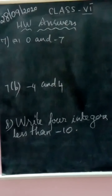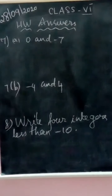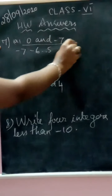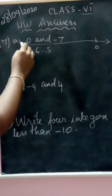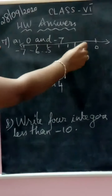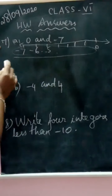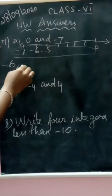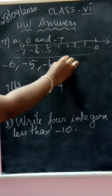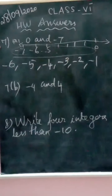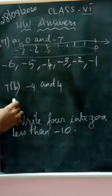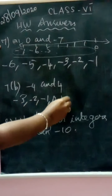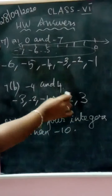The seventh question: we have to find all the integers lying between 0 and minus 7. On a number line, minus 7 is here, then minus 6, minus 5, and so on up to 0. So write minus 6, minus 5, minus 4, minus 3, minus 2, minus 1 — don't include minus 7 or 0 since they are the boundary points. Similarly, for integers between minus 4 and plus 4, write minus 3, minus 2, minus 1, 0, 1, 2, 3 — don't write 4 as it is already given.